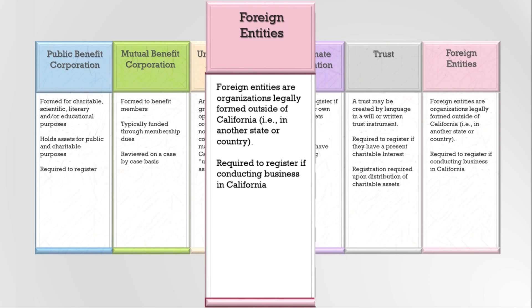Holding property in California. Having people who perform work for the charitable program in California. If an organization located outside California does not target California but accepts donations from anyone through its website, it probably does not need to register, even if it received some donations from California, unless it meets some of the other criteria listed above.